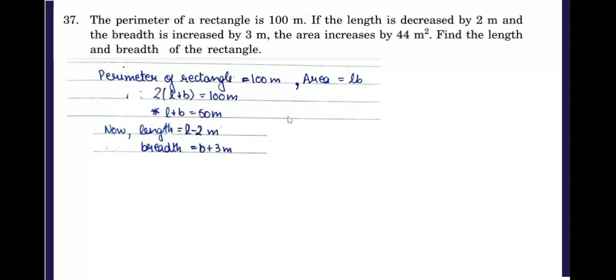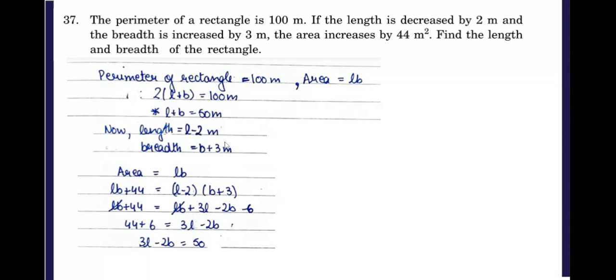Now it is given that length is decreased by 2 meters and breadth is increased by 3 meters. So that means L will be L minus 2 and breadth will be B plus 3. The area increases by 44 meters square, and we know that area is L into B. So the new area will be L minus 2 into B plus 3.